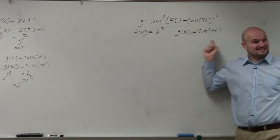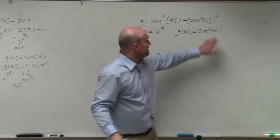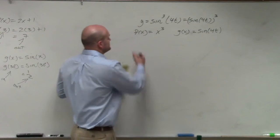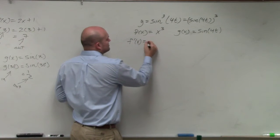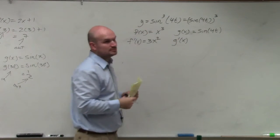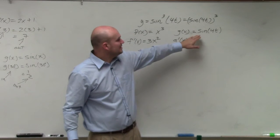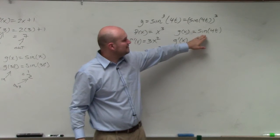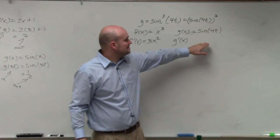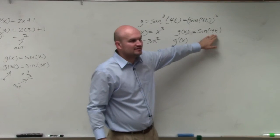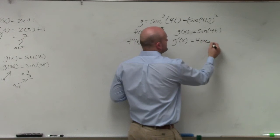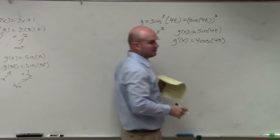So you guys can see, automatically I see a sine of a value, and I know that I'm going to have to use the chain rule again over here. The derivative of f prime is easy — that's 3x squared. For g prime, I'm going to do the chain rule in my head. We have the derivative of sine, which is going to be cosine of 4t, times the derivative of the inside function, which is 4. So therefore I'll have 4 cosine of 4t. I'll write that 4 in front.